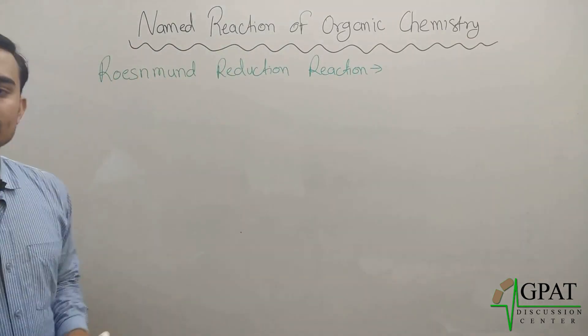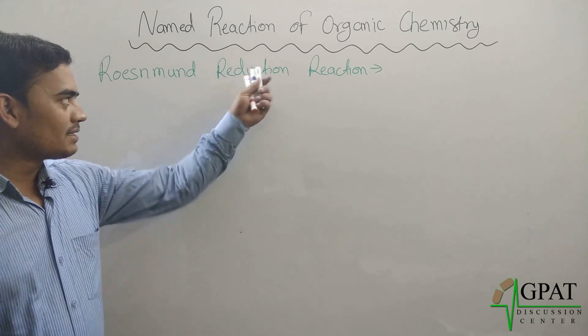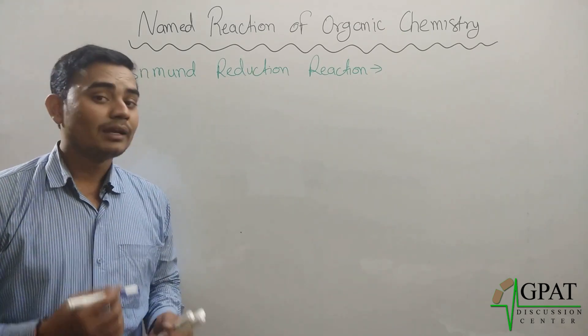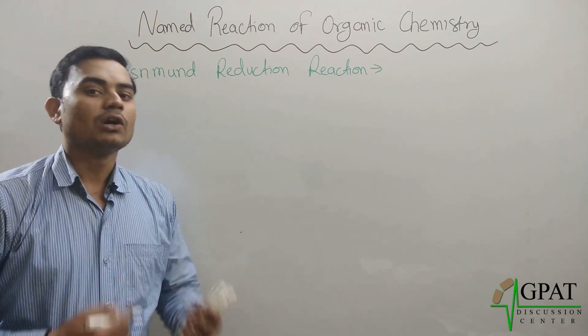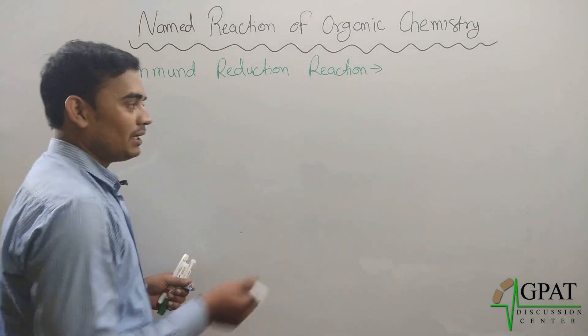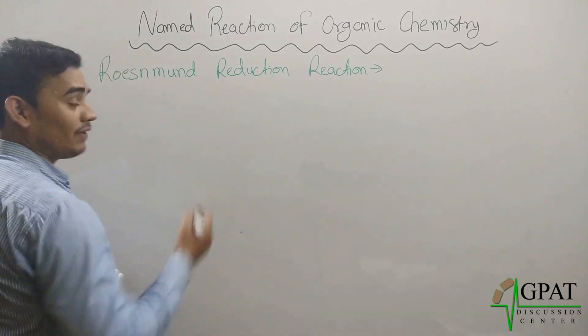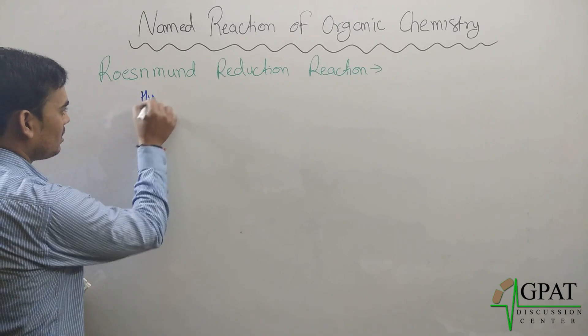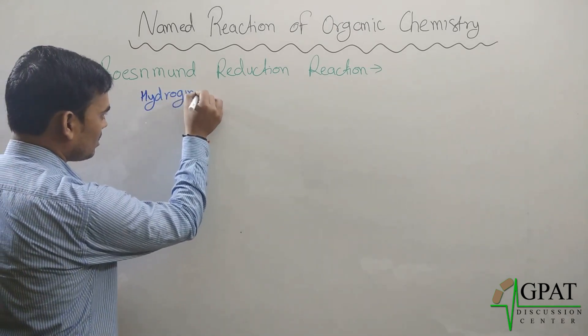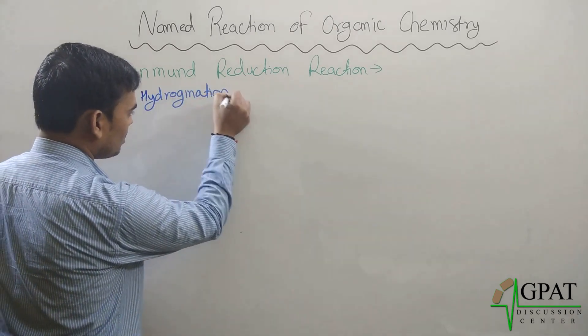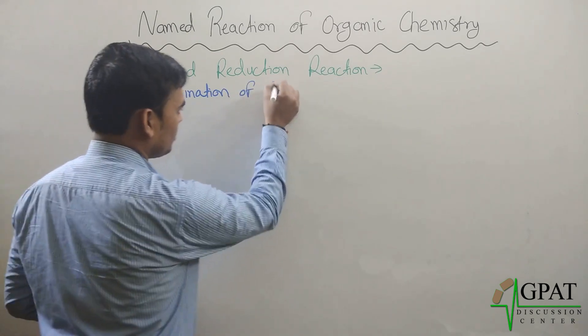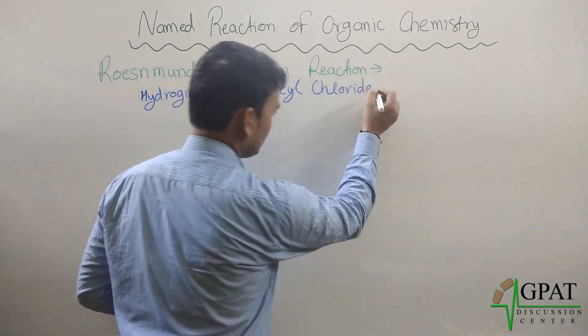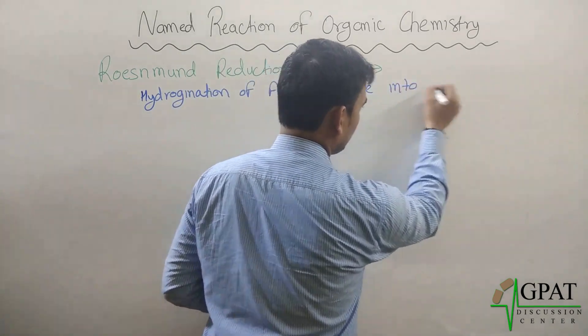Rosenmund reduction reaction - as its name indicates, it's a reduction, so it means there should be either addition of hydrogen or removal of oxygen. Simply, I can define it as hydrogenation of acyl chloride into aldehyde.